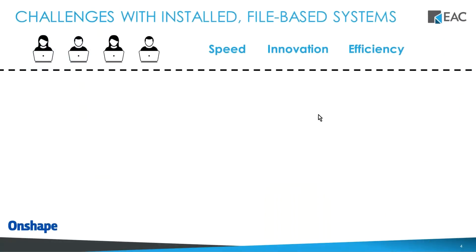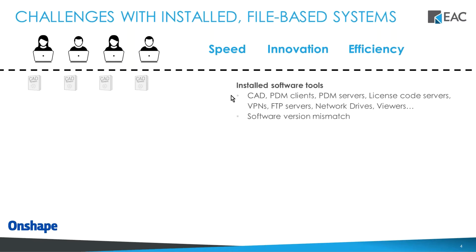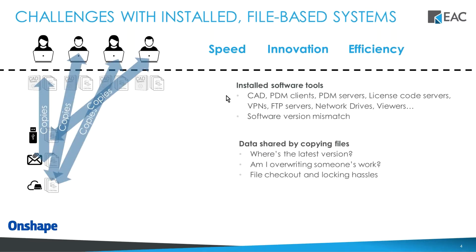To kick things off, we'll talk about your typical designer or engineer. Everybody wants to do things quickly, be able to innovate, and be efficient. Typically, you load some software, start creating files, then exchange those files with one another — people inside the company or partners and vendors. We start sending copies of files all over the place through email, Dropbox, and various other methods.